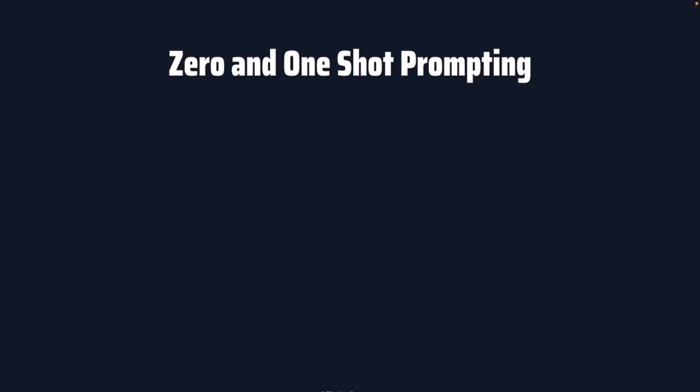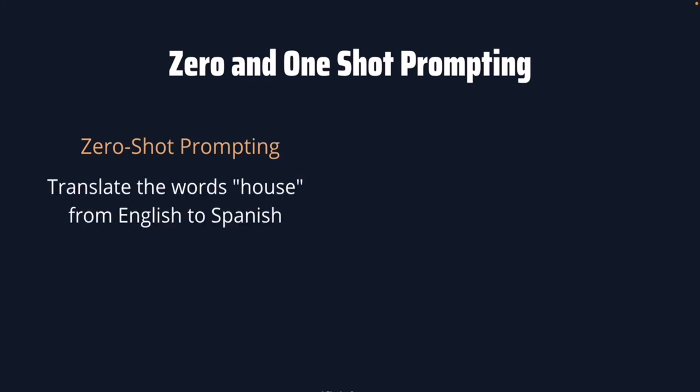Now we're going to learn zero-shot and one-shot prompting. Zero-shot prompting is a technique that consists of providing a prompt that is not part of the training data to the model. The LLM uses a pre-existing language model trained on diverse tasks to generate text for a new task without additional training. Here's an example: 'Translate the word house from English to Spanish.'